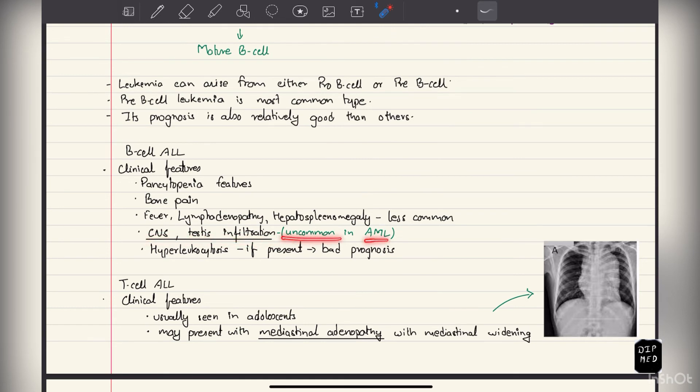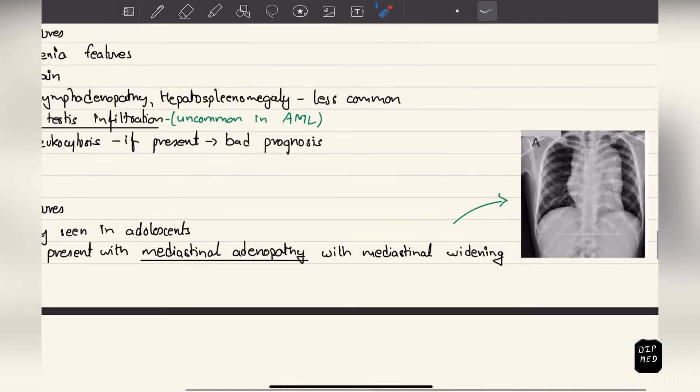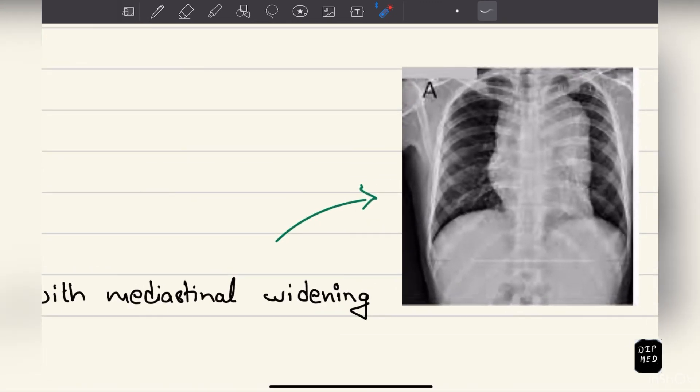T-cell ALL is more common in adolescents, and most of them will present with mediastinal adenopathy with mediastinal widening. Here you can see the widening of the mediastinum.